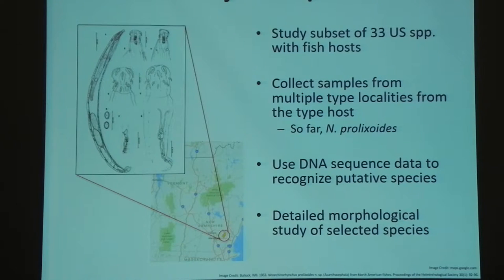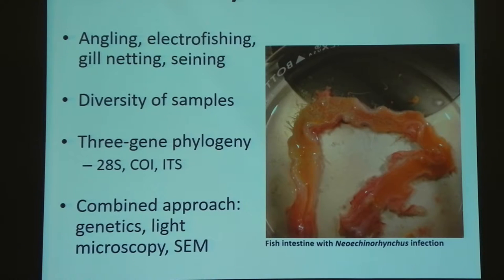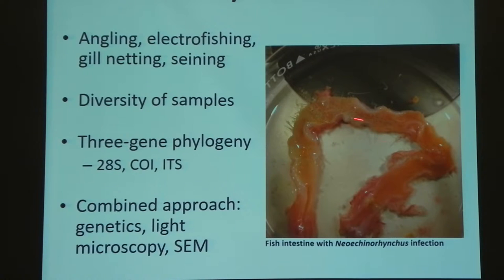I'll do a detailed morphological study of the selected species — whatever we collect, I'll be looking at the morphology of those and then referencing back to the type specimens, which we get on loan from a museum. To collect these fish, we've had a lot of help and got out there ourselves to angle, electrofish, gill net, and seine. This is a picture of a fish intestine that I dissected open — these are all little worms inside of it, all Neokinorhynchus, from a largemouth bass from Montsegal Lake. We try to collect from a variety of fish hosts and also get some geographic diversity.